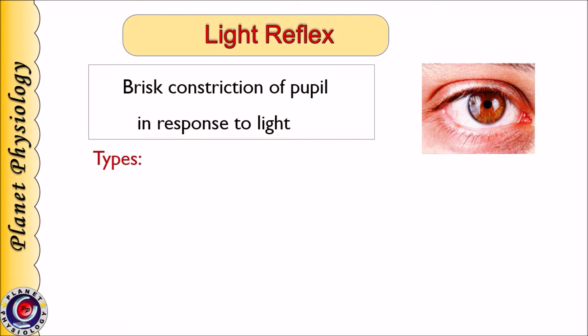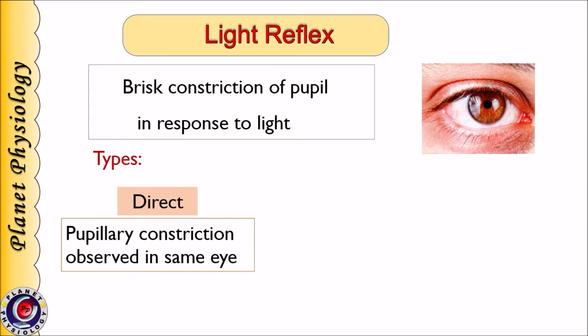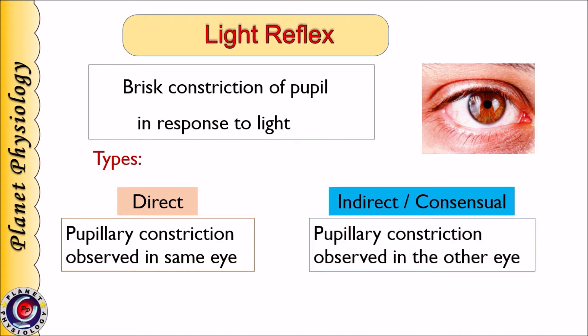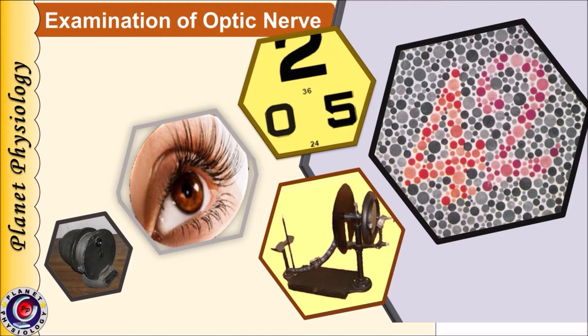It is of two types: direct and indirect. In direct light reflex, pupillary constriction is observed in the same eye to which the light is shown — i.e., if the light is shown to the right eye, the right pupil will constrict. Indirect light reflex is also called consensual light reflex. In this type, pupillary constriction is observed in the opposite eye — that is, if the light is shown in the right eye, the pupillary constriction is observed in the left eye.